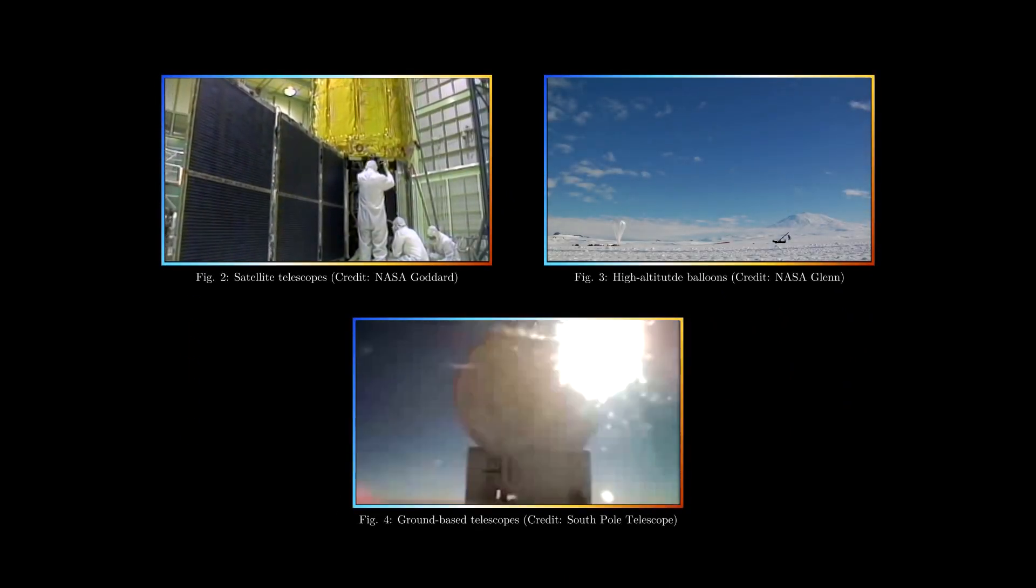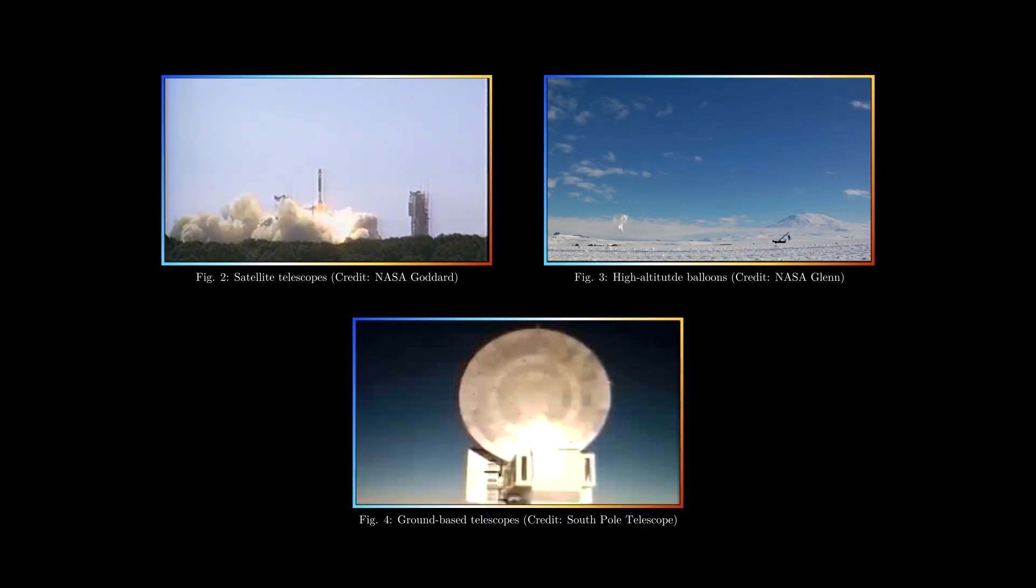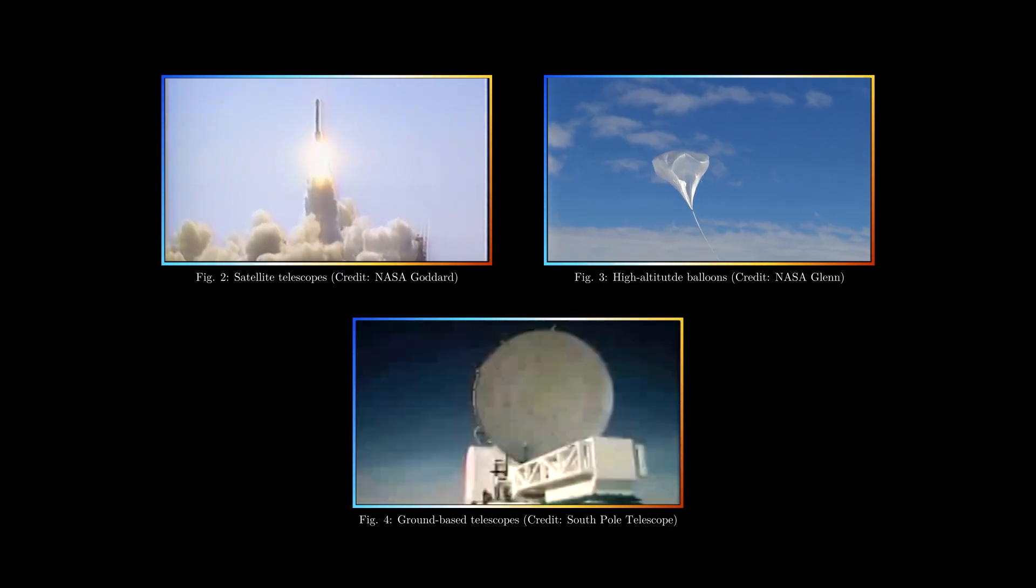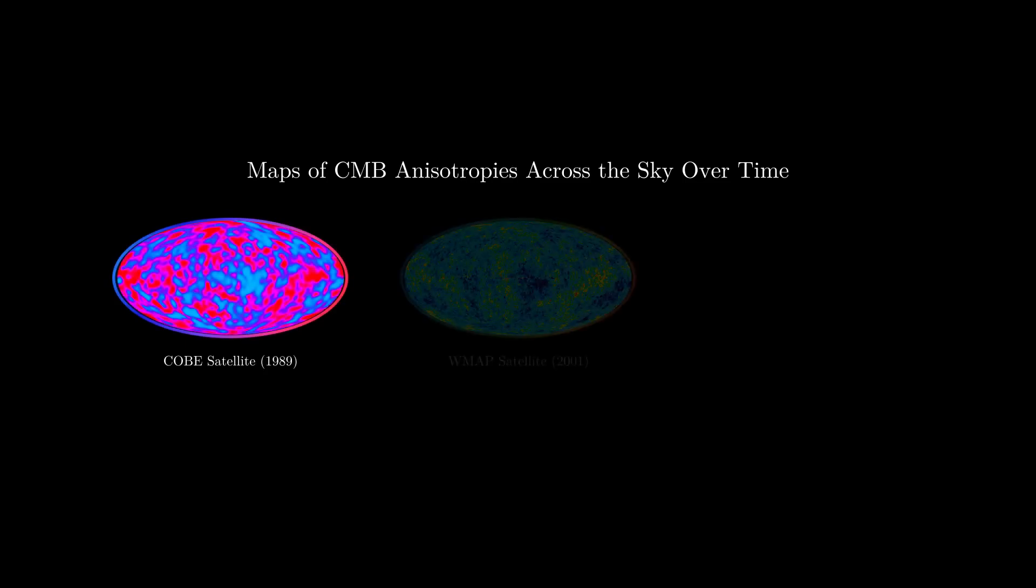Precision measurements of the CMB over the decades has revealed a treasure trove of information about the cosmos. Much of this information comes from detailed maps of variations in the CMB brightness across the sky. But our theories do not predict these exact maps, rather they predict some of their overall statistical properties.